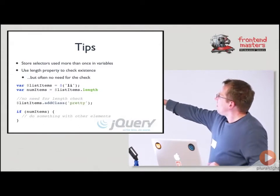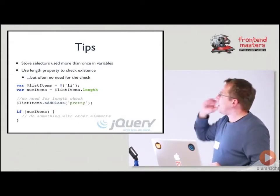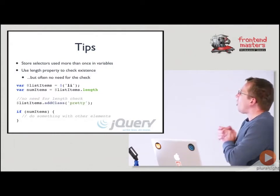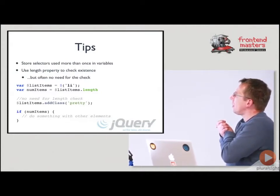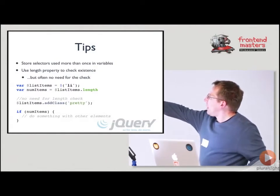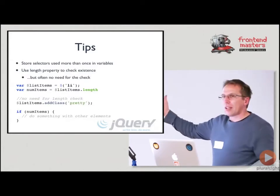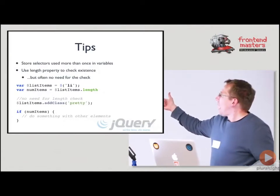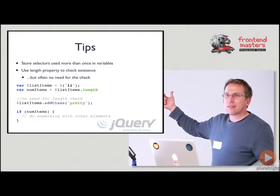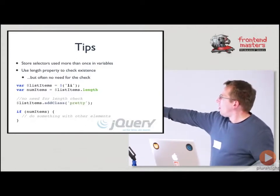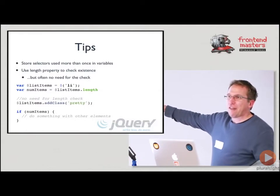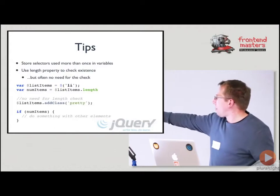You can also use the length property to check if something exists. For example, I'm declaring a variable `listItems` equals `$('li')`, and setting another variable `numItems` to `listItems.length`. That `numItems` is going to tell me how many list items I have. If it's zero, it's falsy. So I could say `if (numItems)` — that would be if the value is one or more — then do something.